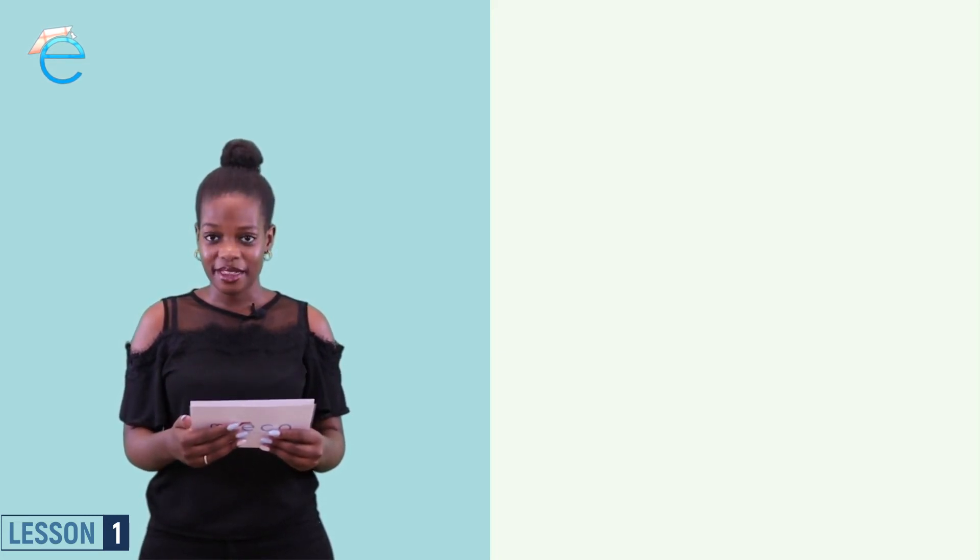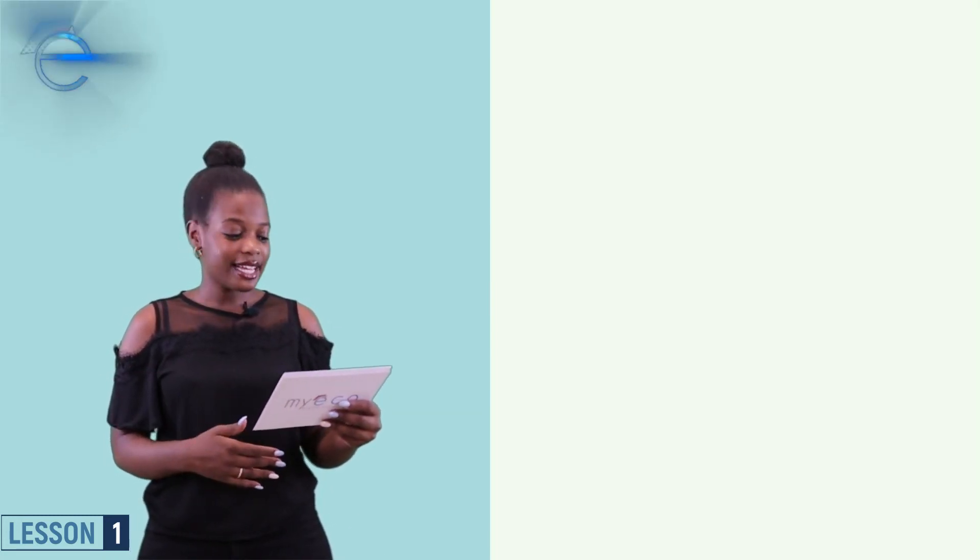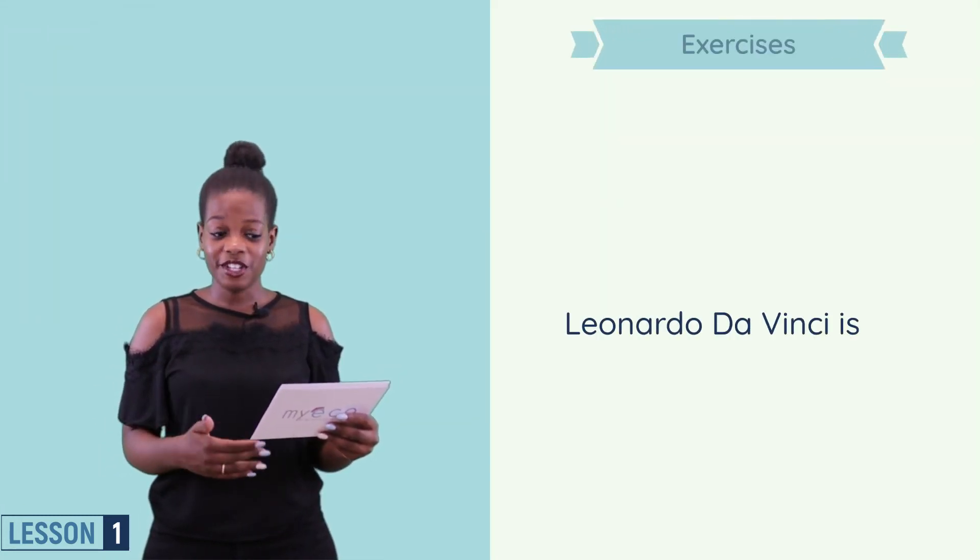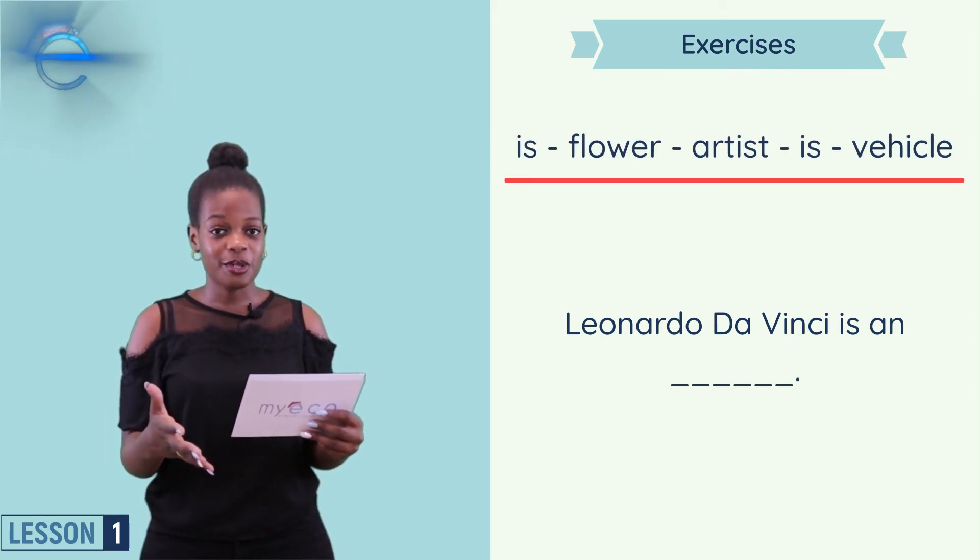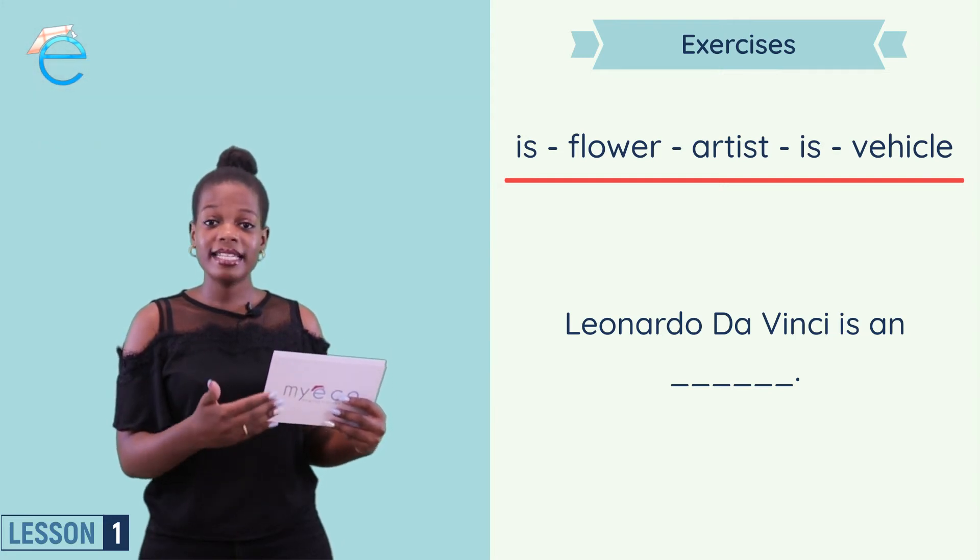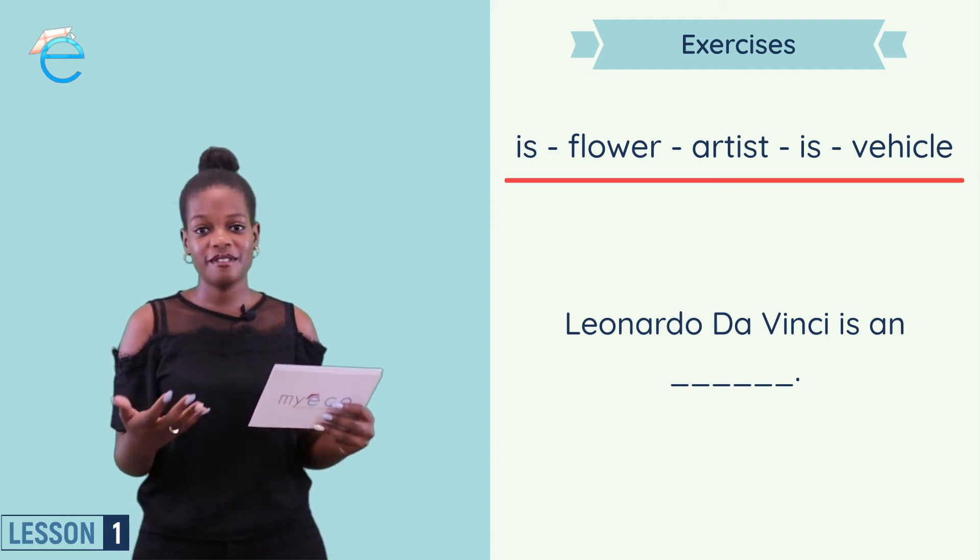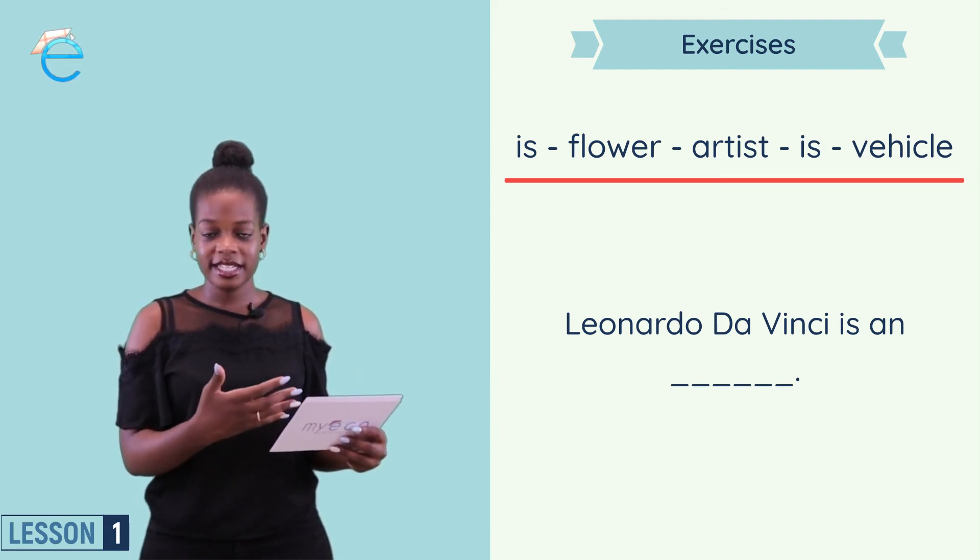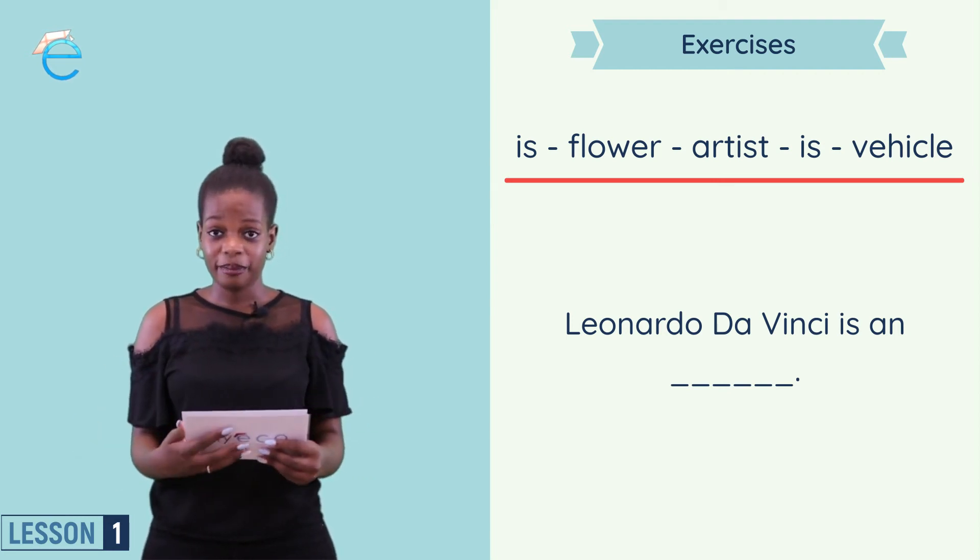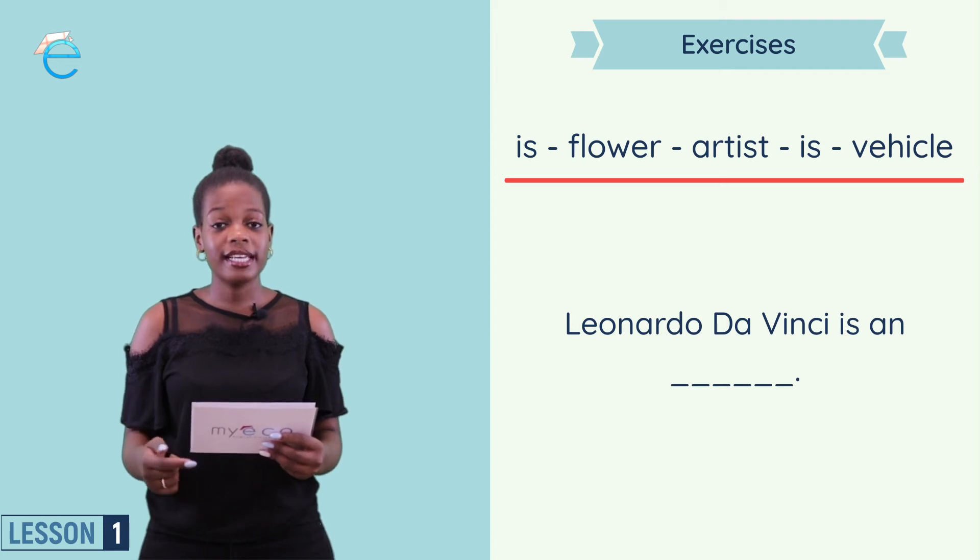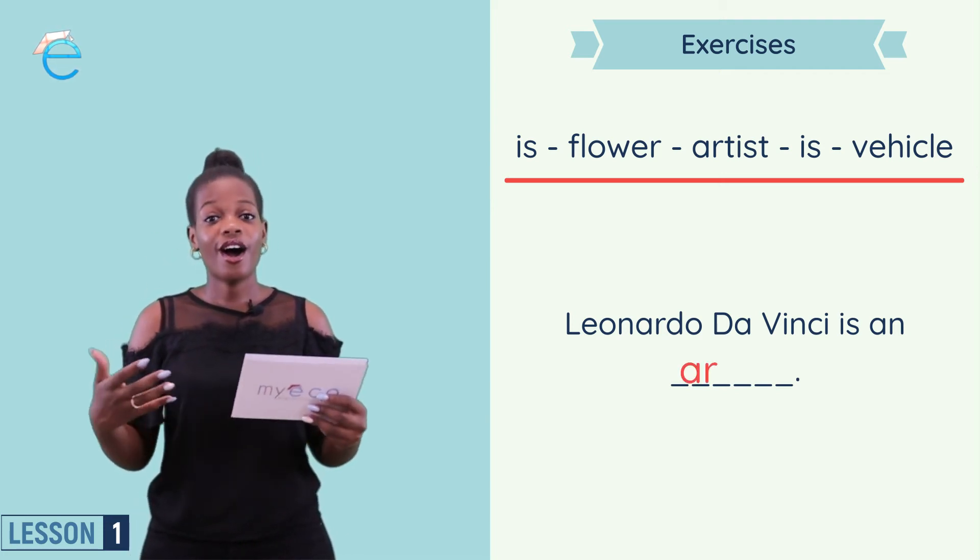Now let's look at an activity together and see if we really understand. Number one says Leonardo da Vinci is an blank. Now we know the structure has to be noun plus is plus noun. My first noun here is Leonardo da Vinci. I have is which is next, and after that I have to have another noun. So we know Leonardo da Vinci is an, so one. Leonardo da Vinci is an artist.